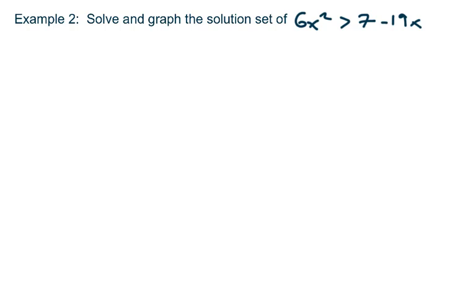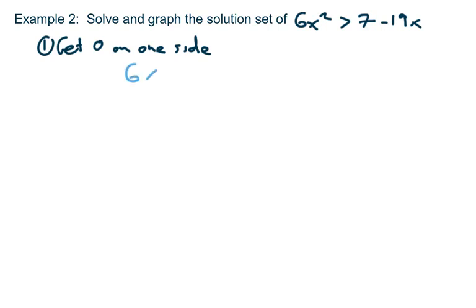Let's do a couple more examples. Solve and graph the solution set of x squared greater than 7 minus 19x. Let me review the steps. The first step is we want to get a zero on one side.